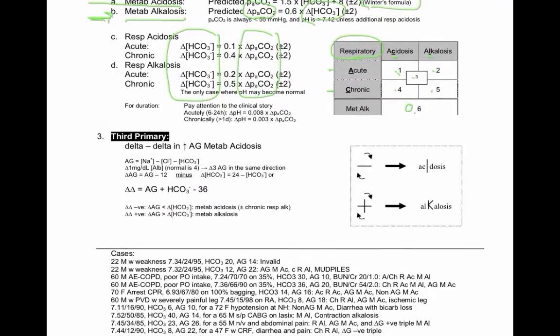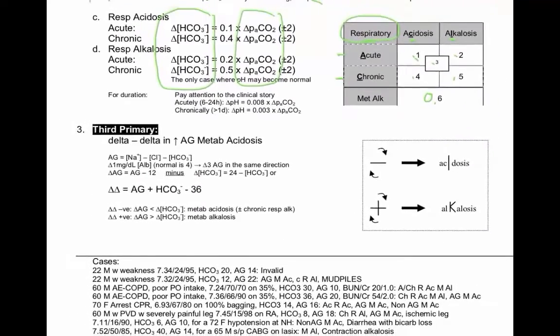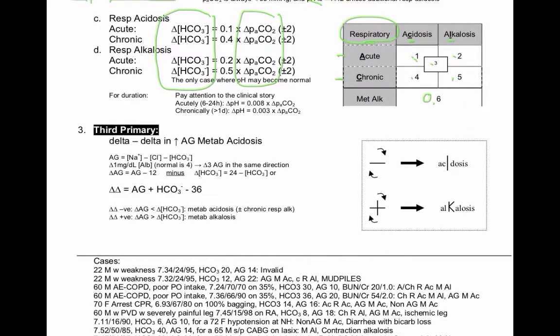Third step is to figure out if there is a hidden disorder. If there is an anion gap acidosis, you have to look for an acidosis or an alkalosis on top of everything else that you already found.